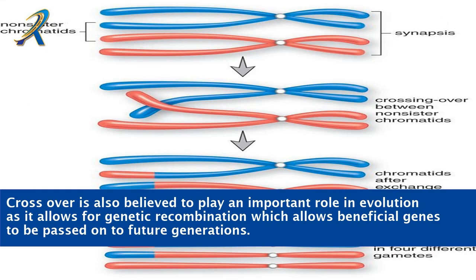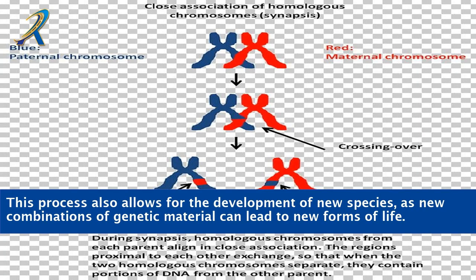Crossing over is also believed to play an important role in evolution, as it allows for genetic recombination which enables beneficial genes to be passed on to future generations. This process also allows for the development of new species, as new combinations of genetic material can lead to new forms of life.